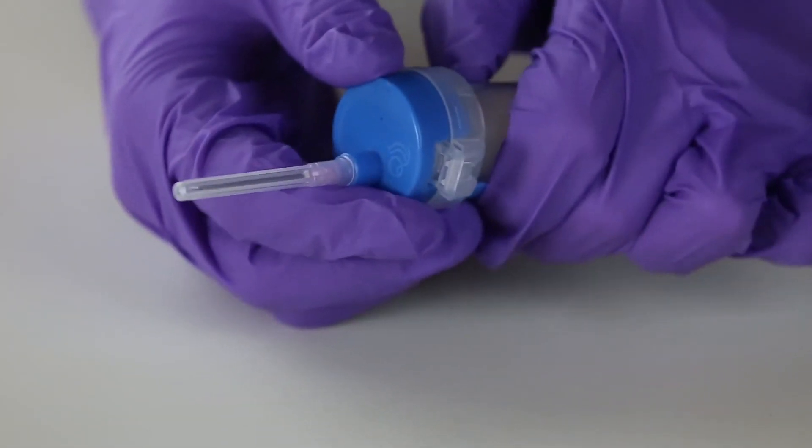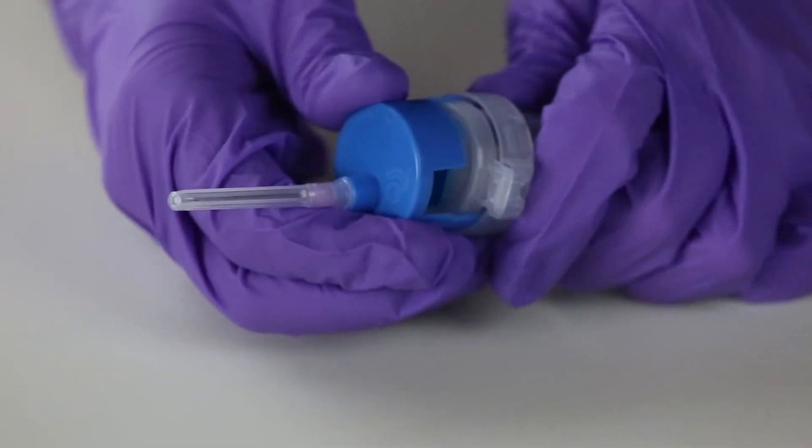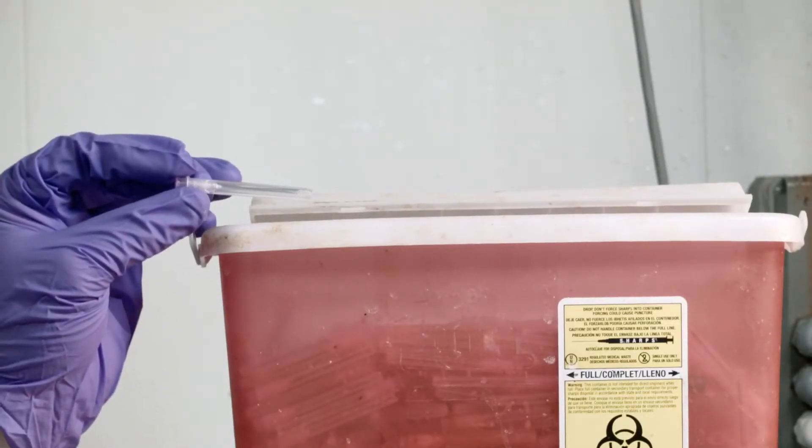Firmly pull the cap and remove it from the TrueDraw Single Sampler. Remove the needle and discard in a sharps container. Place the cap in a trash container.